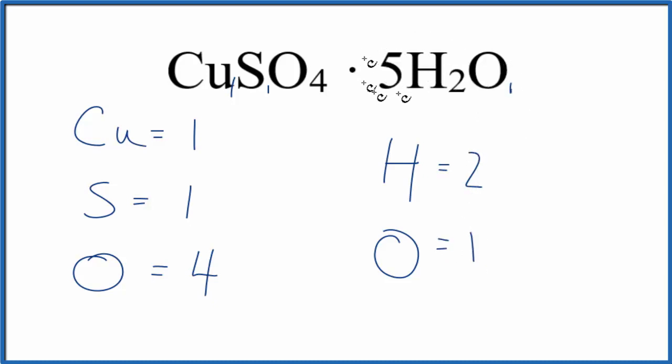But this coefficient of five here, we're going to multiply everything by five. So two times five, that'll give us ten. And then one times five, that'll give us five.